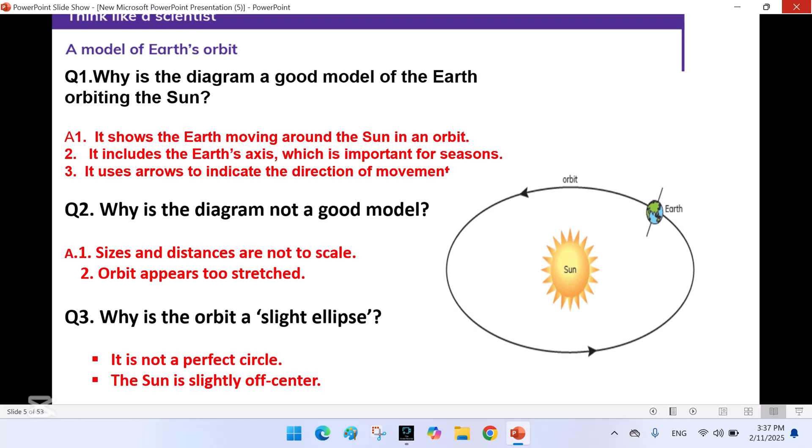Think like a scientist. A model of earth's orbit. Why is the diagram a good model of the earth orbiting the sun? It shows the earth moving around the sun in an orbit. It includes the earth's axis, which is important for seasons. It uses arrows to indicate the direction of movement.